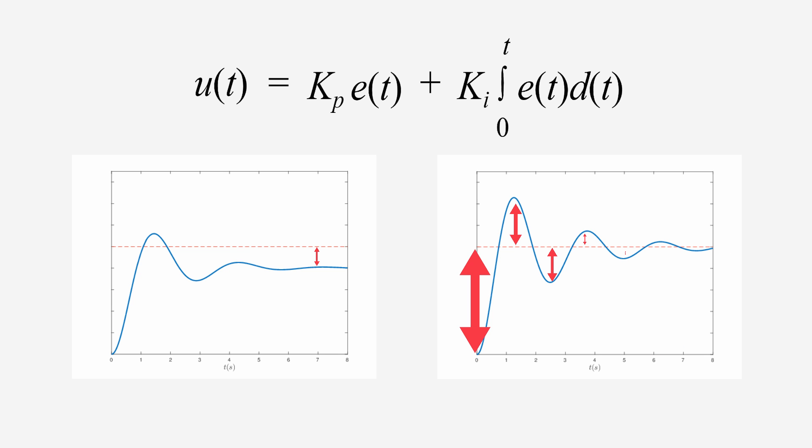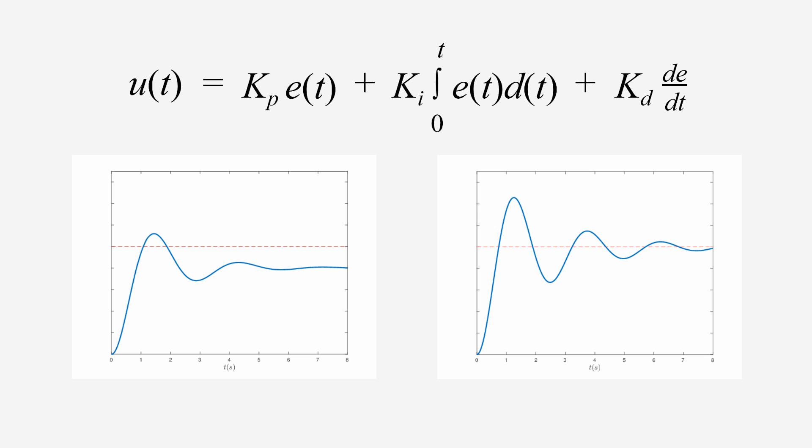Now our graph looks much better. The system actually reaches the set point, and it does so in a fairly timely and accurate manner. But if you see the overshoot that happens and think, that's a problem. In many cases, you'd be right. To combat this, we can add in the final component of PID theory, the derivative.